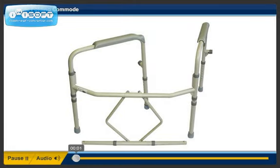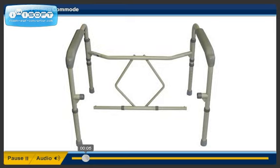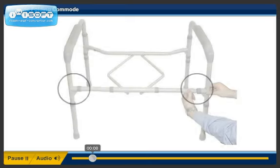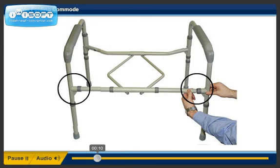Step 1. Unfold the sides of the commode to the front of the commode. Step 2. Insert the front frame into receptacle on each side.